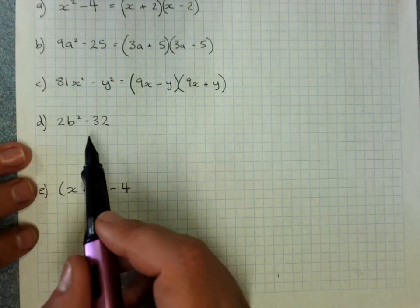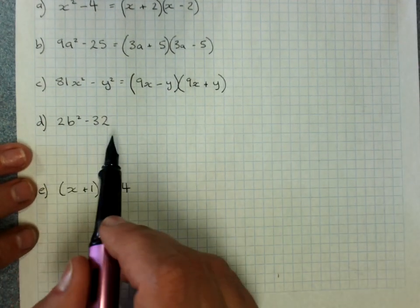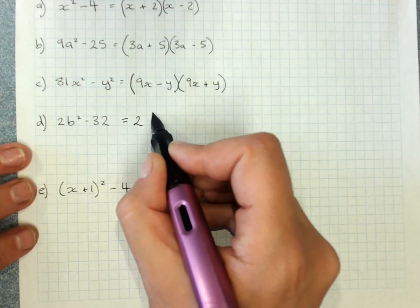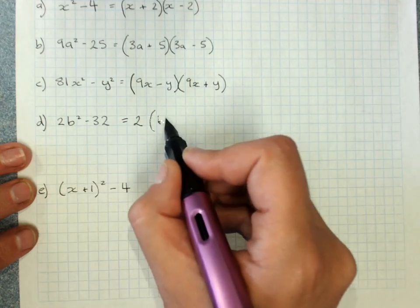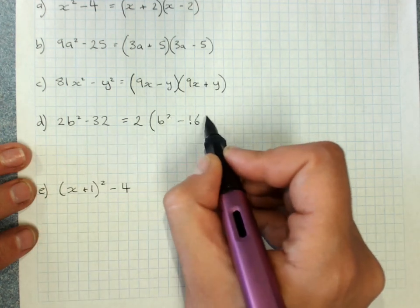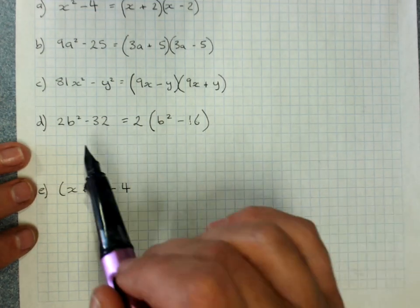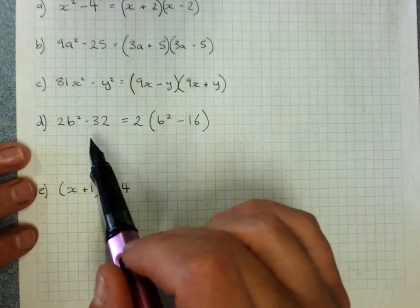2b squared minus 32. Check for a highest common factor. It's 2. Factorize that out first. Dead fairy alert. You're very likely to stop at this point and think, ha, I factorized this. I'm so good. And move on.